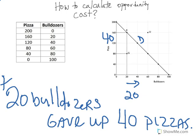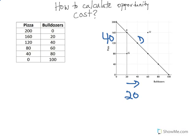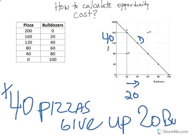As we plot this, it's important we can see that. The reverse of that — it doesn't matter which point you take this from because in this particular example we're going to get a constant slope. If we were going from D to E, we're going to gain 40 pizzas and we're going to give up 20 bulldozers.